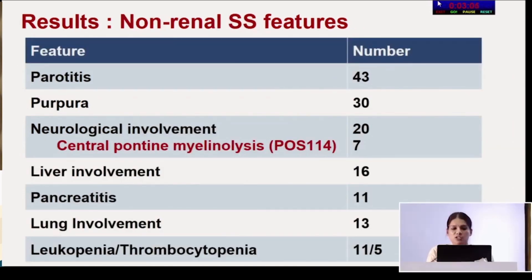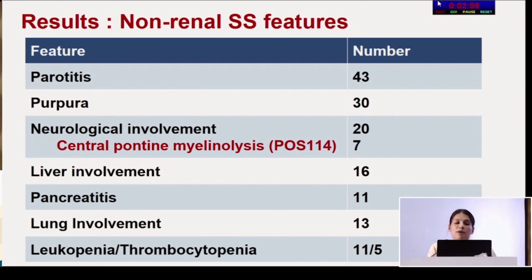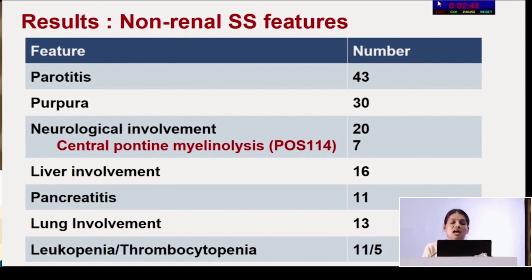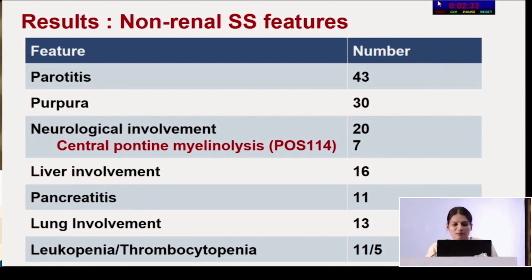Non-renal Sjogren's features in this population included parotitis in 43, purpura in 30, neurological involvement in 20, liver involvement in 16, pancreatitis in 11, lung involvement in 13, leukopenia in 11, and thrombocytopenia in 5. A unique finding was that central pontine myelinolysis — osmotic demyelination syndrome — was overrepresented and is not described in the literature as a characteristic feature of either Sjogren's or RTA. A paper on this has been submitted to IRACON as poster number 114.